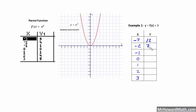It was 4, now it's going to be 7. This coordinate with negative 1 as an x coordinate, the y coordinate was 1, so now that will be 4. It was 0, now it's going to be 3 for the y coordinate. The y coordinate was 1, now it's going to be 4. It was 4, now it's going to be 7. And then this y coordinate was 9, now it's going to be 12. So we're just going to plot these points and then graph them.